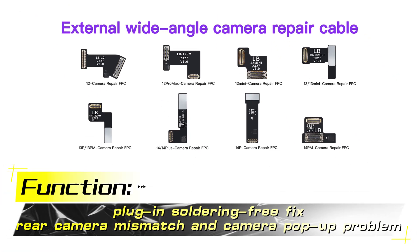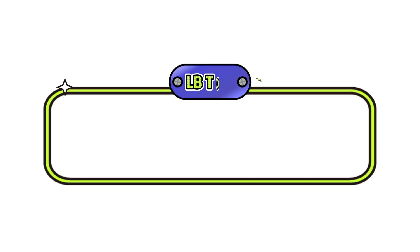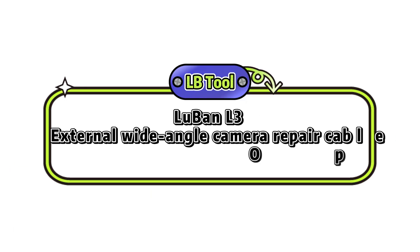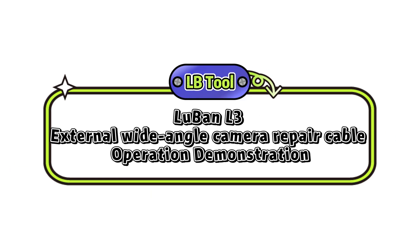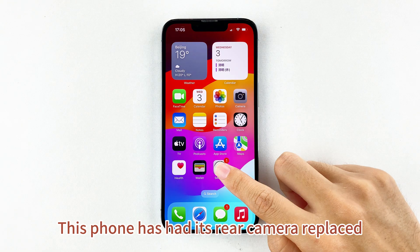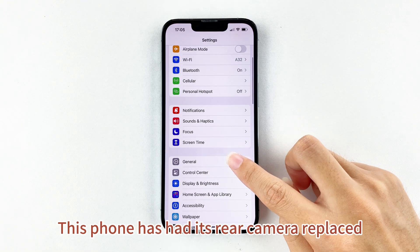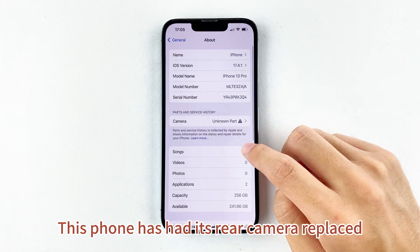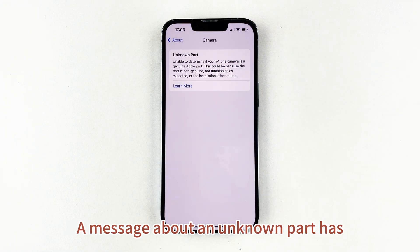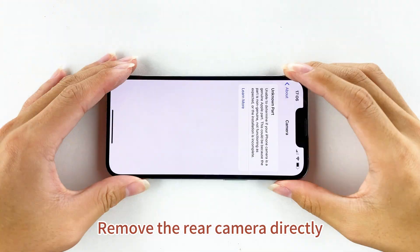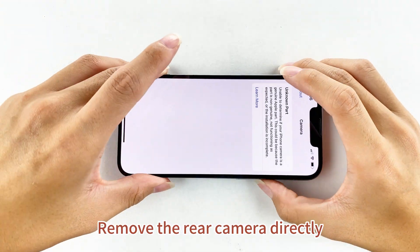Function Plug-in Soldering Free Fix: Rear Camera Mismatch and Camera Pop-up Problem on the Luban L3, using an External Wide Angle Camera Repair Cable. This phone has had its rear camera replaced and is showing a message about an unknown part. Remove the rear camera directly.